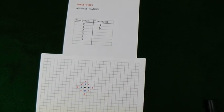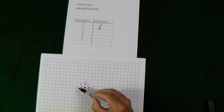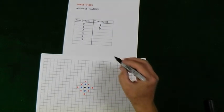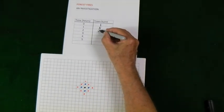Let's see how many trees are now ablaze. One, two, three, four, five, six, seven, eight, nine, ten, eleven, twelve, thirteen. We have thirteen trees ablaze.